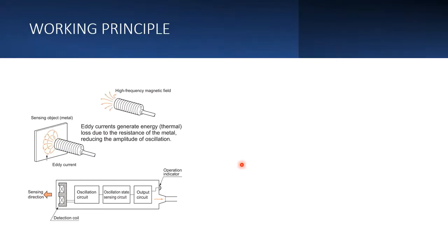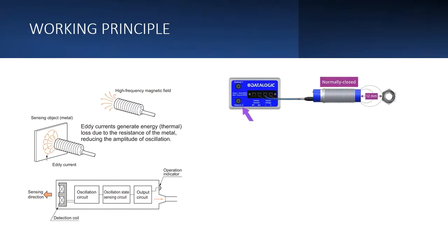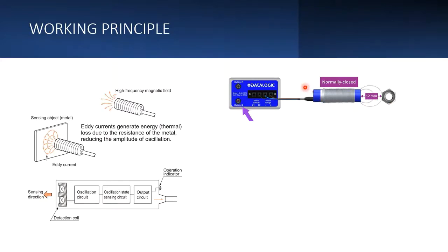How much distance can this sensor sense? It depends on the size of the sensor and how strong a high frequency magnetic field it creates — the higher the magnetic field, the longer the distance it can cover. Here you can see a steel nut with a 12 mm sensing range. As soon as the nut comes within this range, the sensor gives a signal on the back side. As soon as it moves away, the sensor turns off.